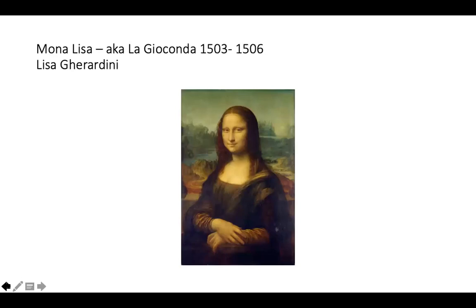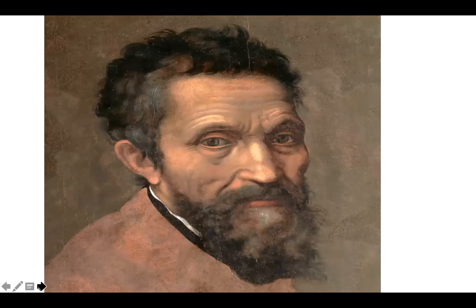What Leonardo was ultimately signaling is that Lisa Gherardini — La Gioconda — is a virtuous wife. She's very wealthy, and the painting is memorializing the birth of a child — which some people say is her third child, most say her second.